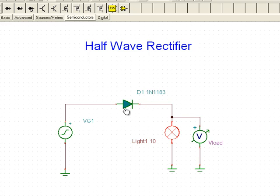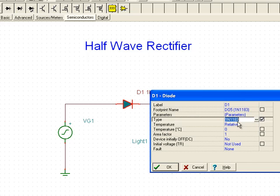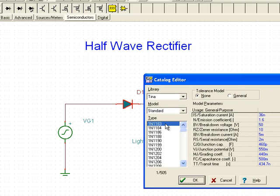The AC is going to flow through this diode. If we go up to the semiconductors tab, the plane rectifier diode is the first diode on the list. And if we go into its properties, it's a 1N1183. It's the first one on the drop-down list for type.